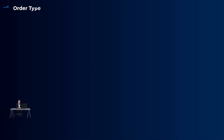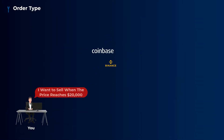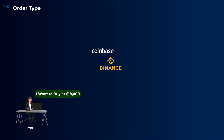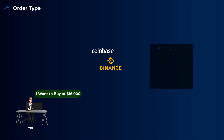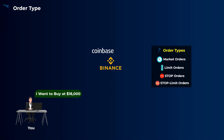So what is an order type? An order type is simply instructions you give to the exchange on how you want to buy or sell crypto and at which price you want to execute your order. Each order type is like a tool that has a specific purpose or use case.